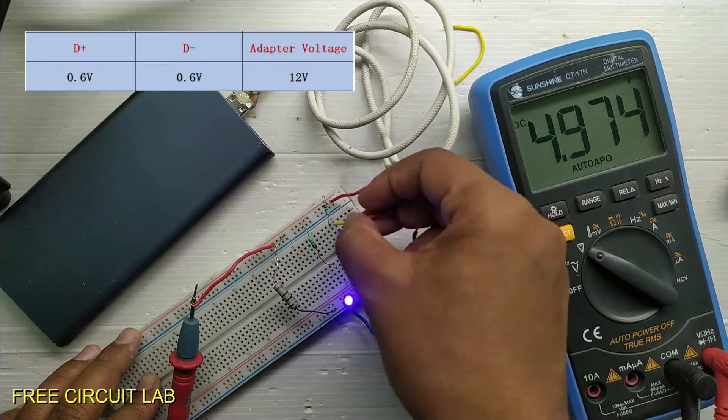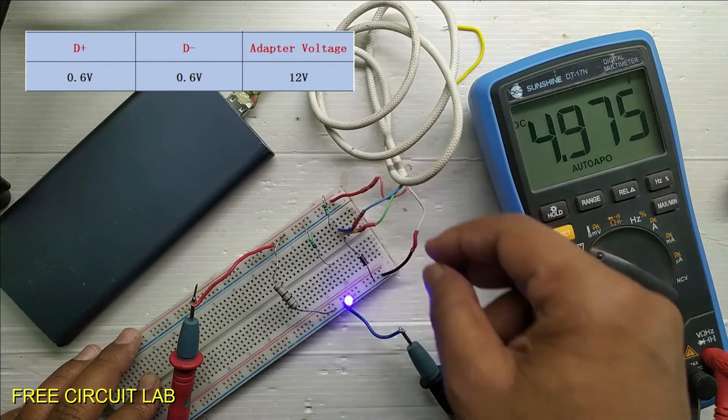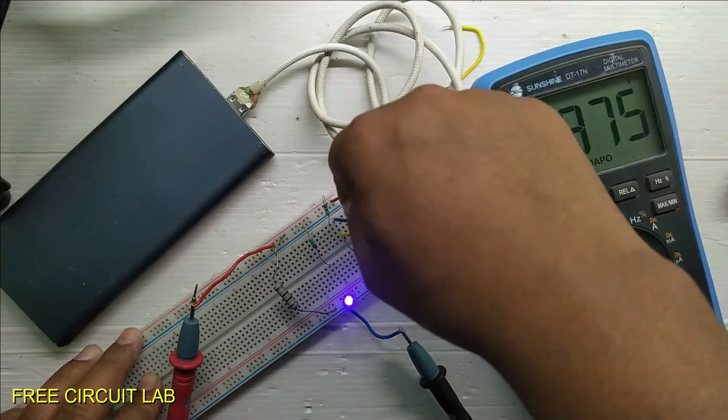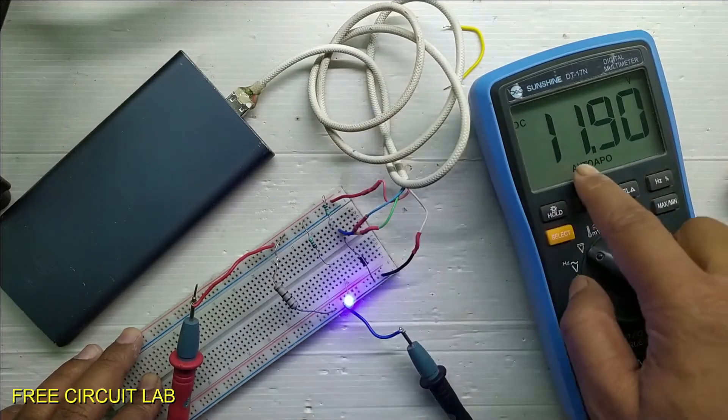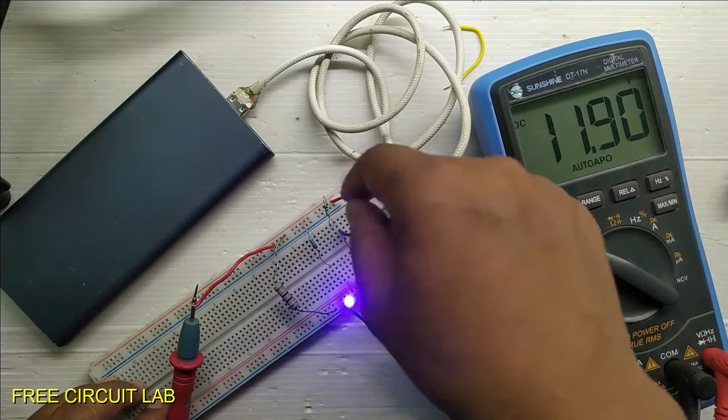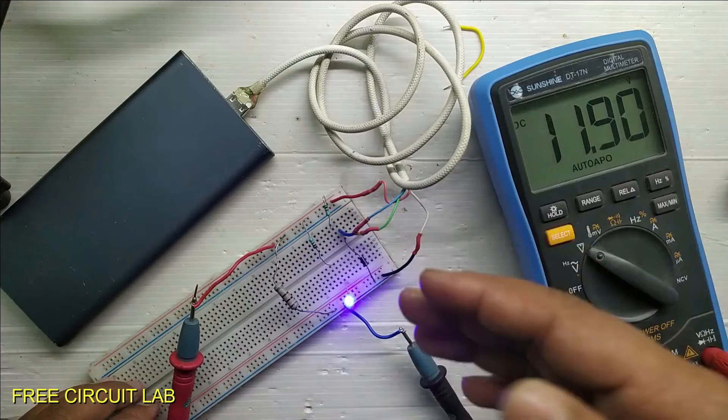Now let's hook both to 0.6V which is the configuration for 12V. But the voltage does not change until I disconnect and reconnect the D minus. Now we can see the communication is not so difficult. It is just some simple voltages and we can easily manipulate them.